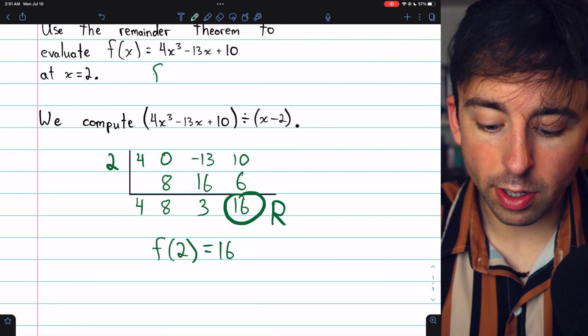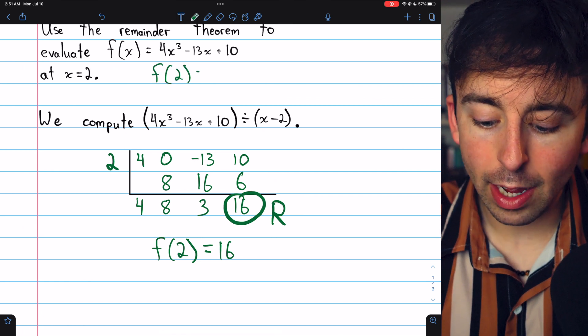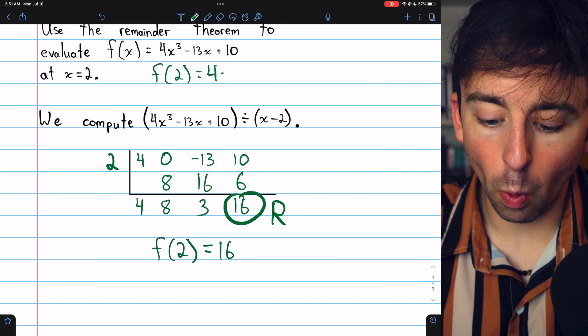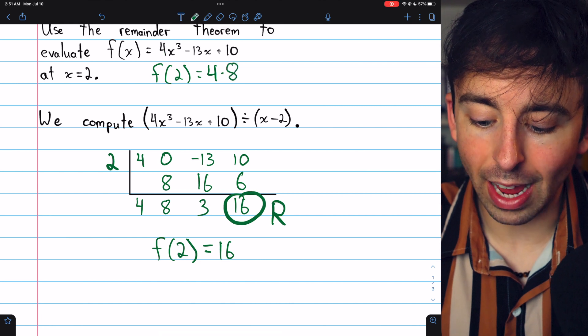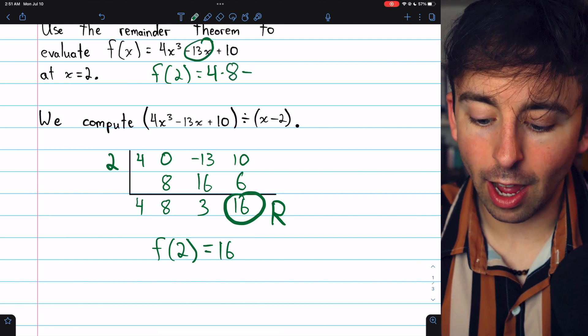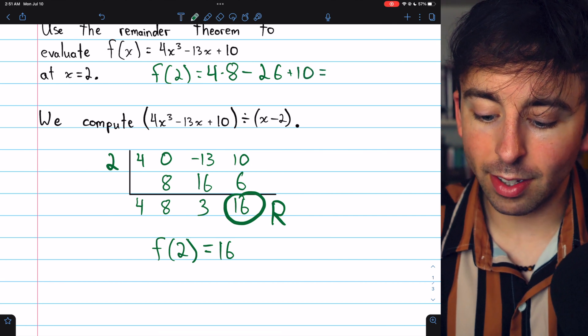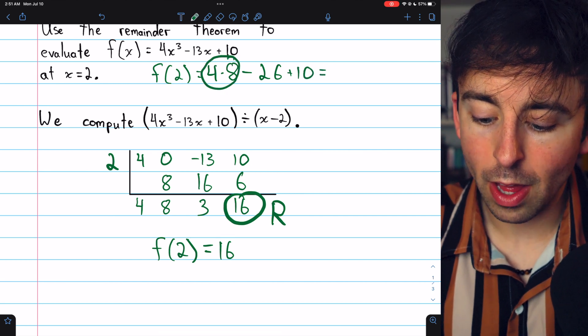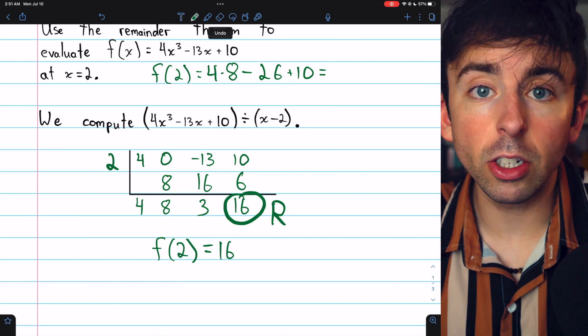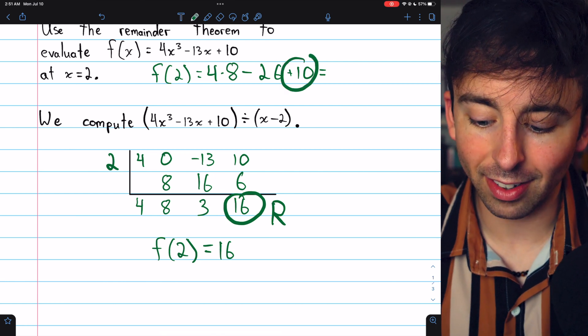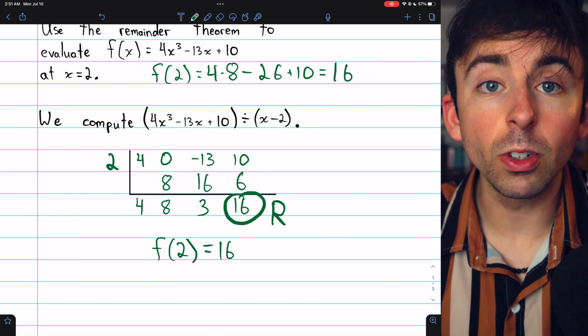We can try evaluating the function the old-fashioned way to verify. If we plug 2 in, we'll have 4 times 2 cubed, which is 8, minus 13 times 2, so minus 26, and then plus 10. This is equal to 32 minus 26. 32 minus 26 is just 6, and then that gets added to 10, which is 16.